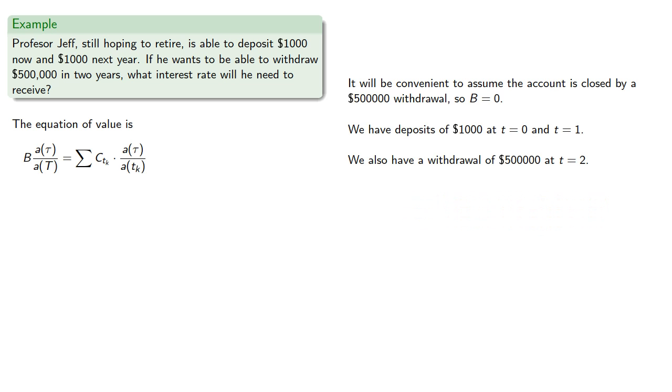Assuming we're getting compound interest, then a(t) is 1 plus i to the t, and so we need a(0), a(1), and a(2), which are?